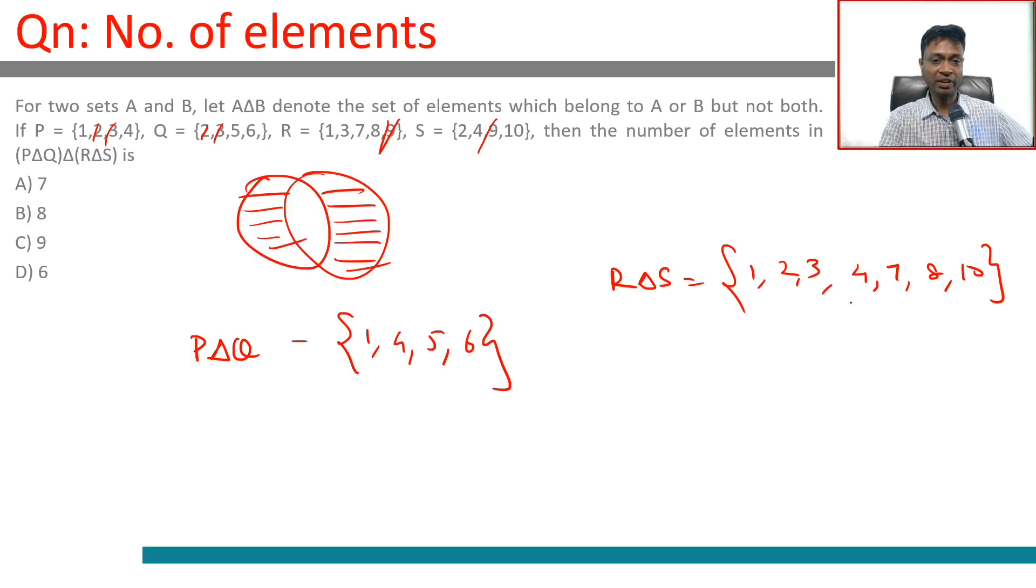Only one common element, so from 5 plus 4 we remove that one common element twice over. We should have 7. Now this triangle this, what is common? One is common, one goes away.